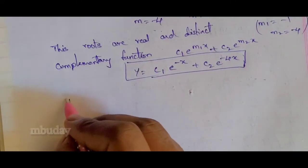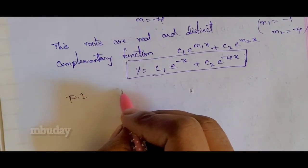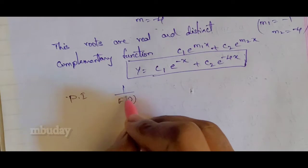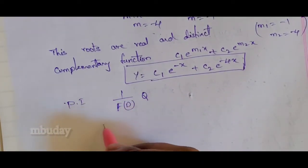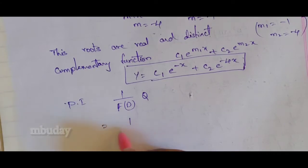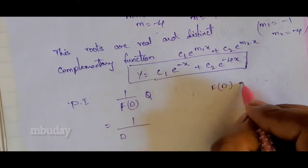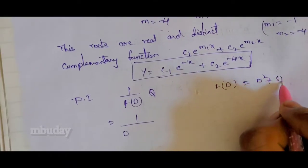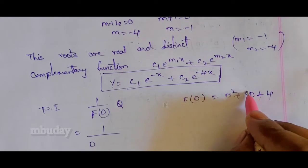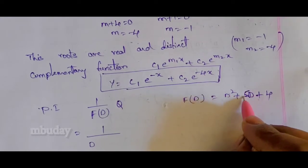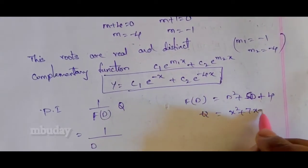Now I'm going to find the particular integral using the formula: PI equals 1 by F of D into Q, where F of D is D squared plus 5D plus 4 and Q is x squared plus 7x plus 9.